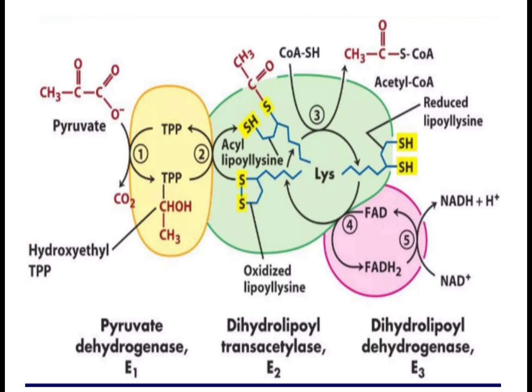Hydroxyethyl thiamine pyrophosphate is regenerated back to thiamine pyrophosphate by the second enzyme, dihydrolipoyl transacetylase. During this conversion, oxidized lipoamide is converted to acyl lipoamide. The acyl lipoamide then reacts with coenzyme A, which accepts the acyl group to form acetyl-CoA, while reduced lipoamide is produced.